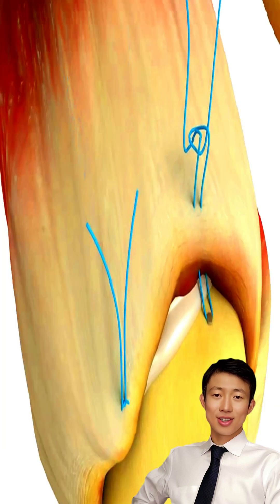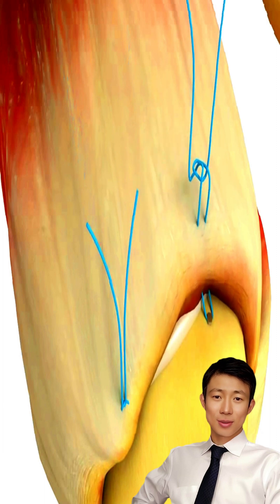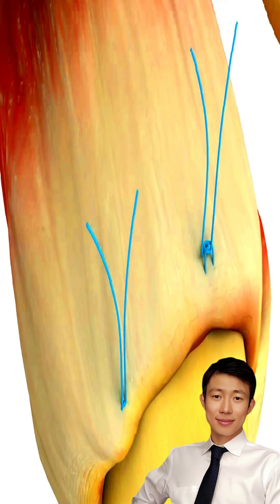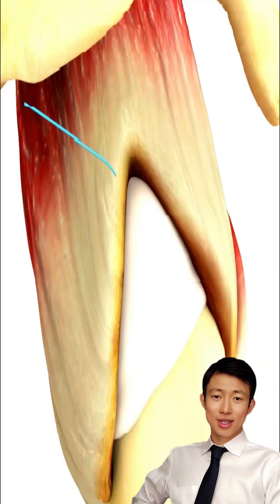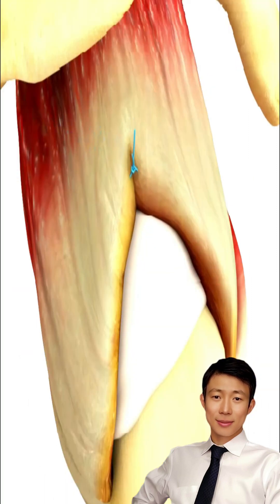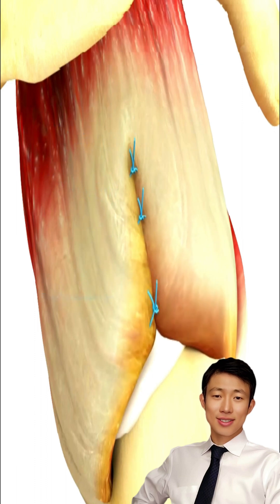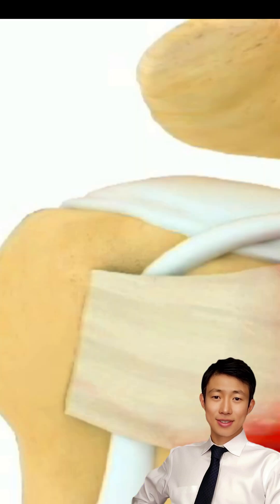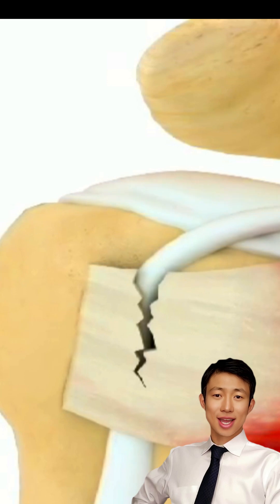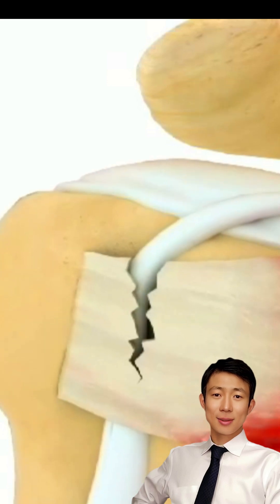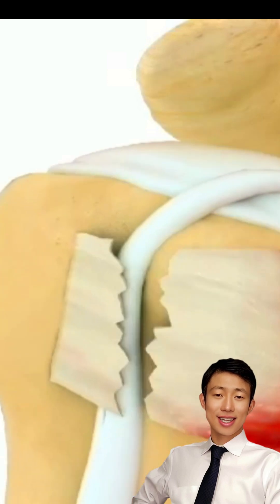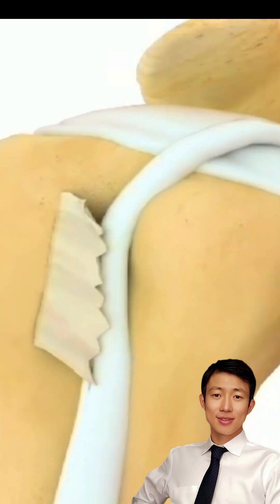Crescent tears are often reparable with minimal tension. U-shaped tears typically require margin convergence due to medial extension. The location of the tear, especially involvement of the cable or subscapularis, significantly affects function.